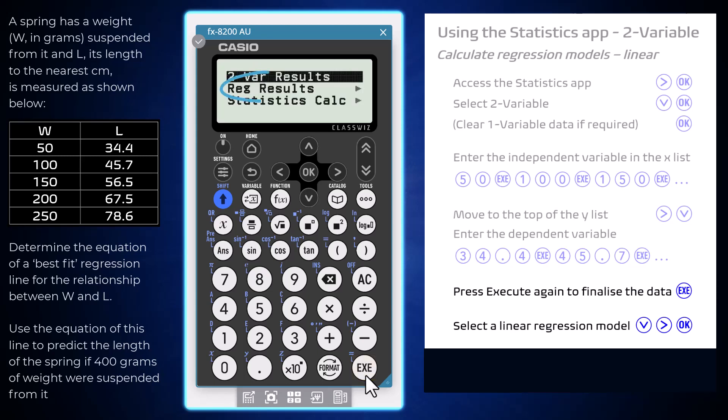Now choose regression results by arrowing down then right. Make your choice of regression model. To choose the linear regression model which is the first listed option, press OK. This output shows the values of a and b in the regression line y equals a plus bx. It also shows Pearson's r, the data set's correlation coefficient.